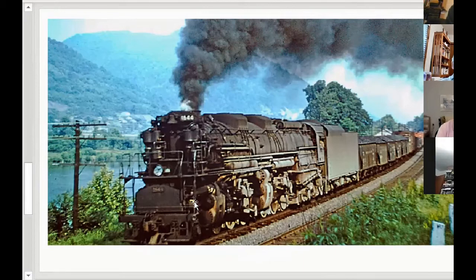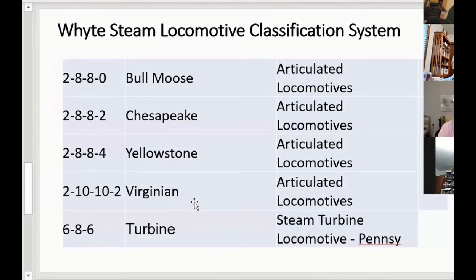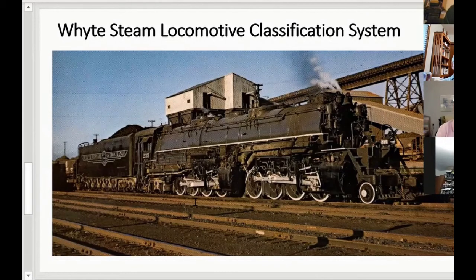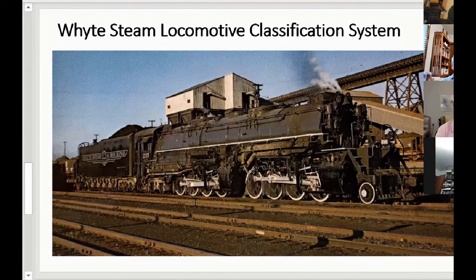Lima built a huge firebox under the 2-6-6-6. It needed a six-axle truck and pulled really well. They found out it was about 50,000 pounds overweight, but fortunately the C&O had really good track so they used them very heavily. Then the last ones are the Yellowstone, named by the Northern Pacific to run across North Dakota on the undulating track. Other railroads bought them too, including the Duluth, Missabe and Iron Range, which ran them well into the 1960s — hauling 180 loaded iron ore cars, about 14,000 tons, from northern Minnesota down to Proctor.